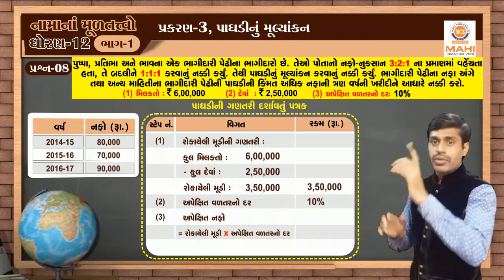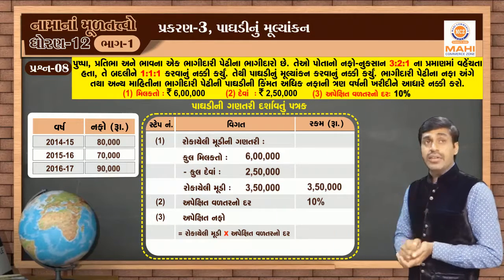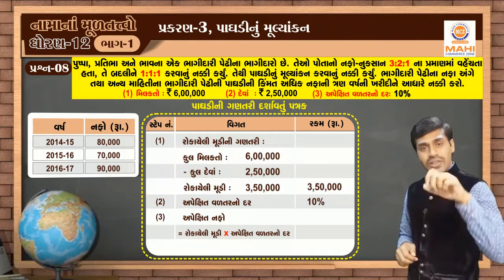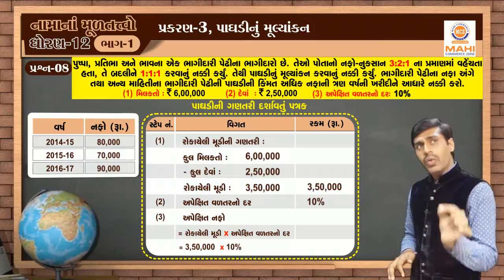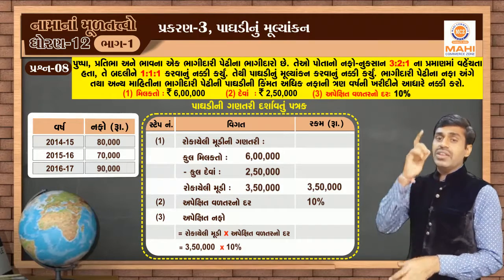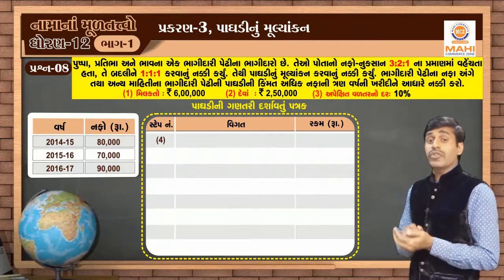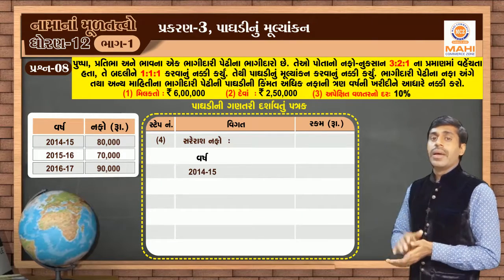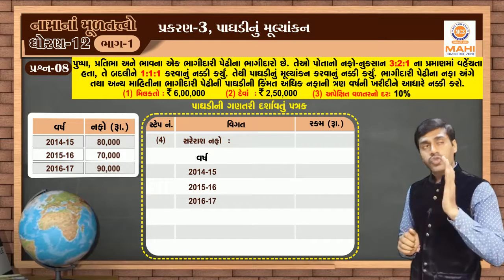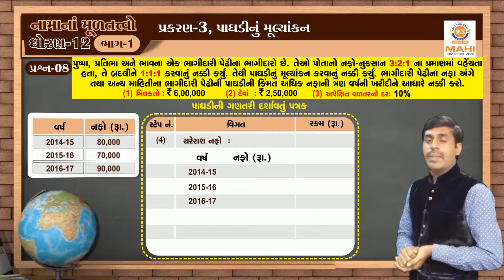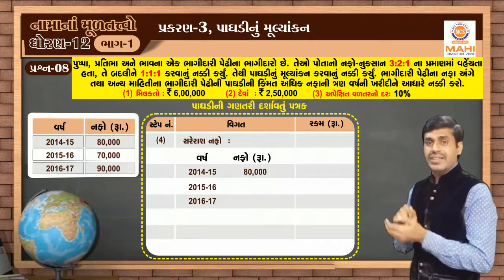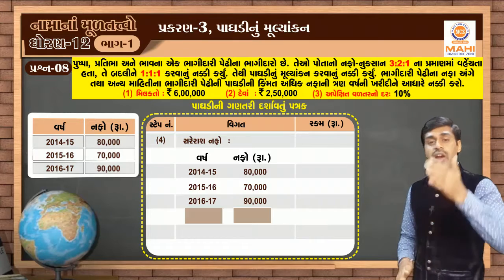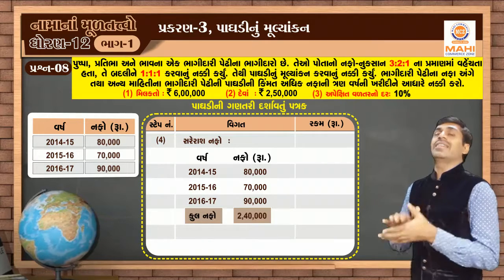Step number 1: 3,500 multiplied by the expected rate of return, which we have assumed at 10% in this step. 3,500 multiplied by 10,000.